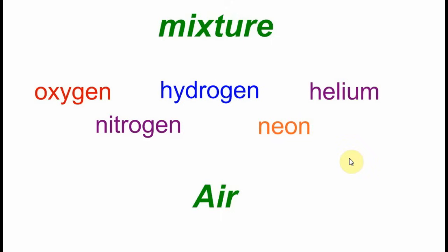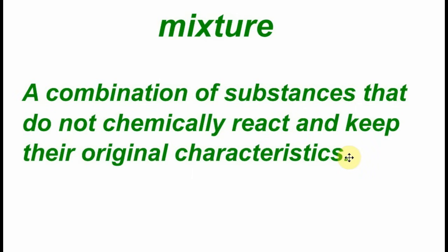After seeing those examples, can you come up with a definition for a mixture? See if you can and then come back and I'll give it to you. Alright. Welcome back. I hope you got your definition. Let's see if yours matches mine. A mixture is a combination of substances that do not chemically react. And they keep their original characteristics. They're the same as when we put them in there. Nothing changes. And that's a very key concept that you need to understand. In a mixture, when we put things together, nothing changes. It's just this combination of all the original items.